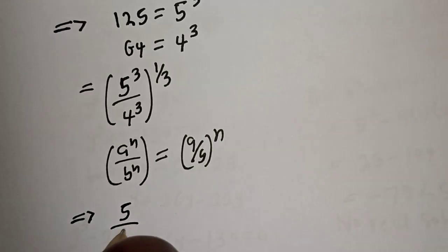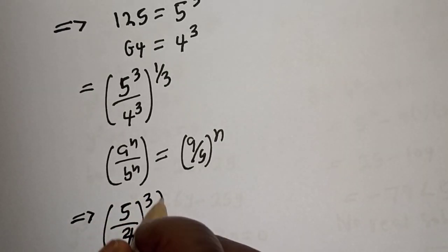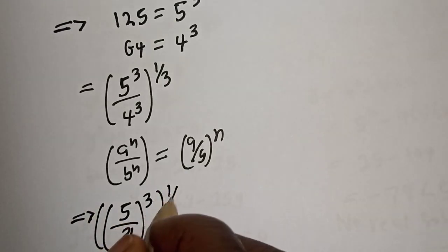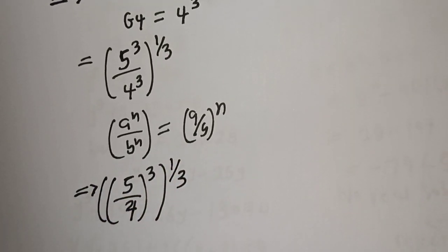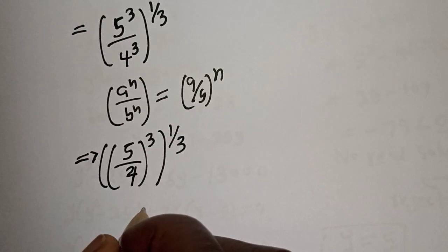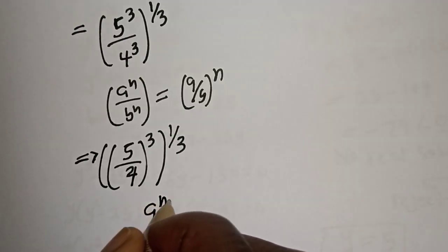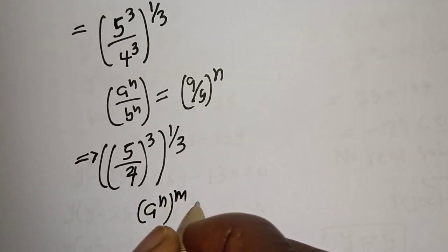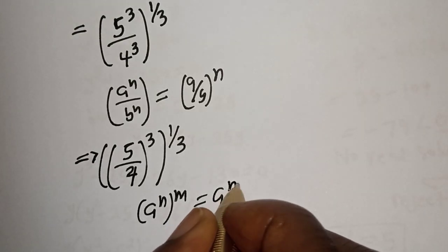We have 5 over 4 raised to power 3, to the power of 1 over 3. Take note of this rule: if you have a raised to power n raised to power m, this is equal to a raised to power nm.